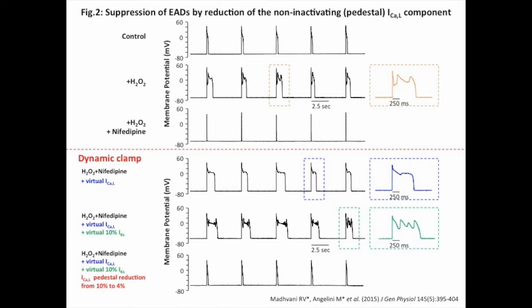Strikingly, we found that reducing the non-inactivating pedestal current of the L-type calcium current from 10% of the peak to 4% was highly effective at abolishing the EAD regime despite the continuous presence of hydrogen peroxide. This finding is quantified in the following figure.